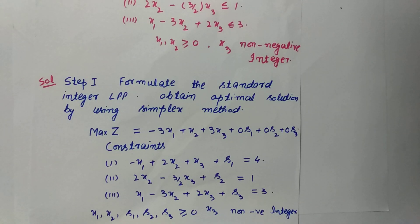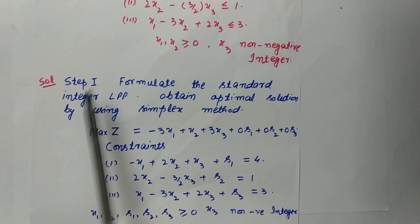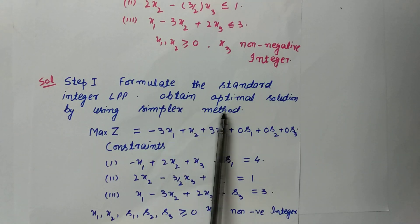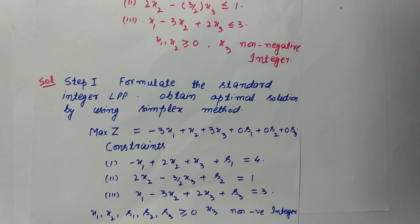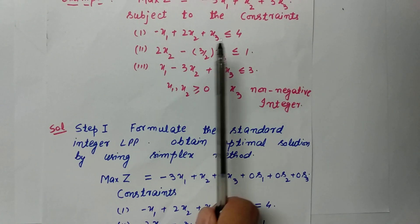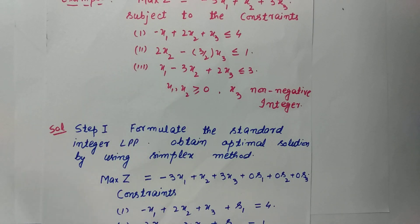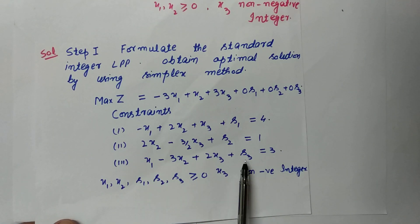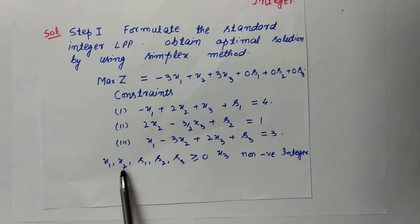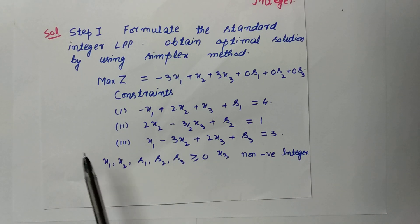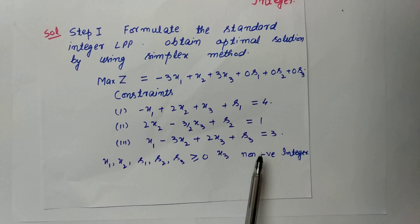Let us start with the first step. We have to formulate the standard form of the given linear programming problem and then obtain the optimal solution using the simplex method. If you want to learn the simplex method, I have provided a link in the description. I converted this problem into standard form by removing the inequality and adding slack variables s1, s2, and s3 to the three constraints. All variables x1, x2, s1, s2, s3 are ≥ 0 and may be integers or non-integers, but x3 must always be a non-negative integer.